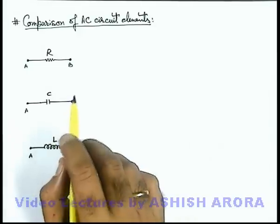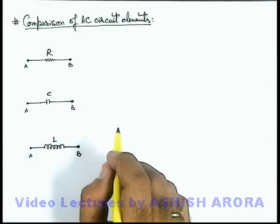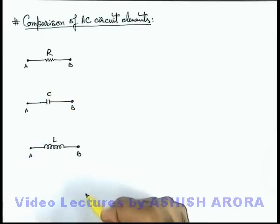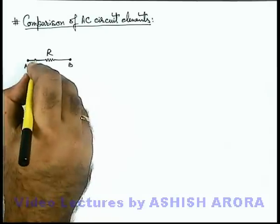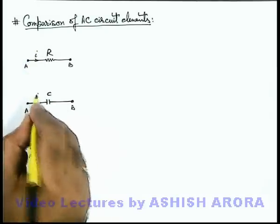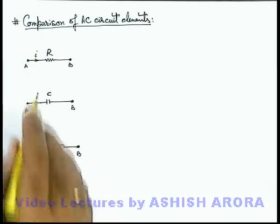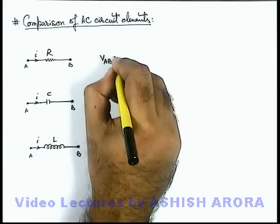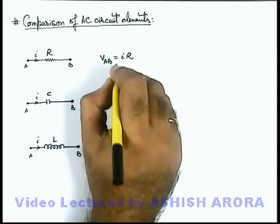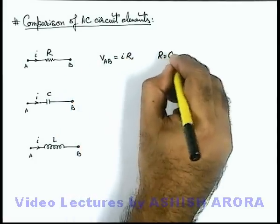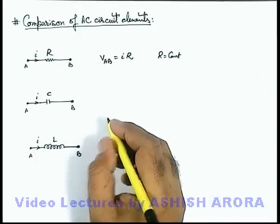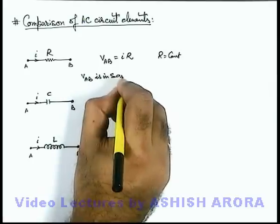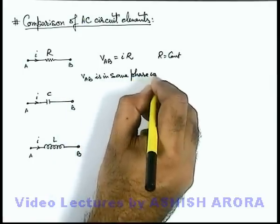Let us compare different AC circuit elements. We have discussed three circuit components: resistance, capacitance, and inductor. If an alternating current i flows through these components, in case of resistance, the potential difference across terminals A and B we can write as V_AB = iR, where R is a constant. In case of resistance, V_AB is in same phase with i.